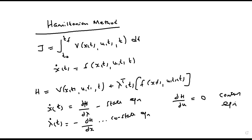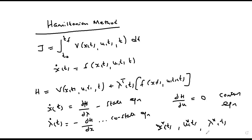With this simultaneous set of equations — the state equation, the cost-state equation, and the control equation — we can proceed to determine their solutions, and through that determine the optimal values of the states, the optimal control input u(t), and lambda(t). Lambda helps us determine the optimal values of the states and input of our given system.